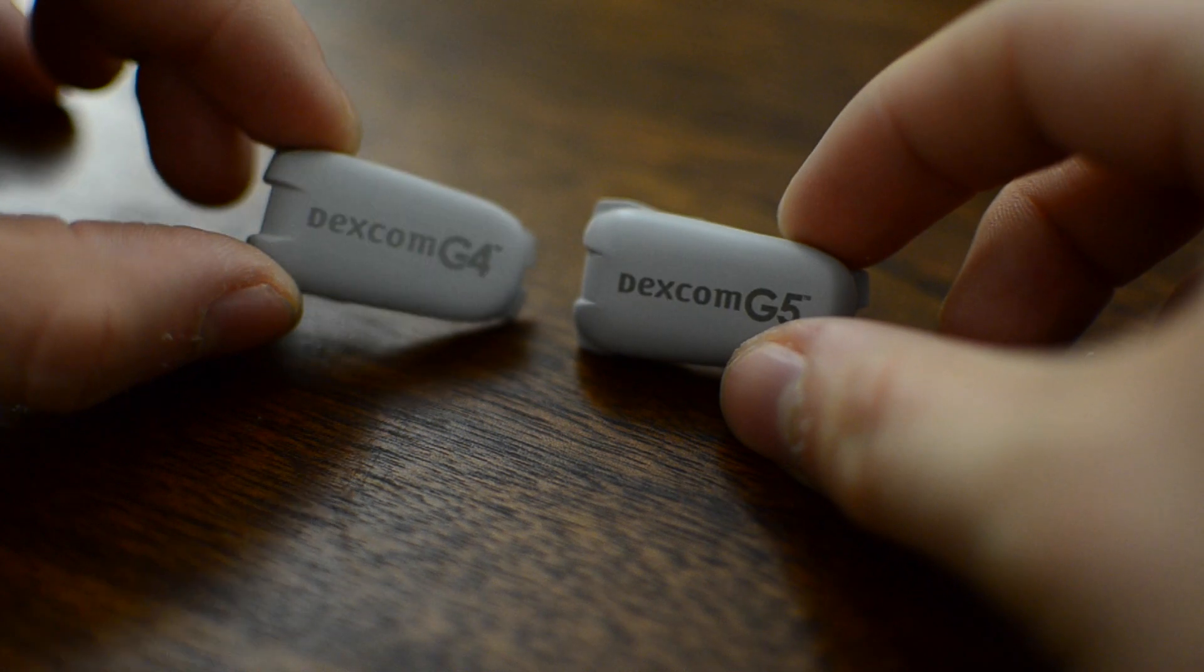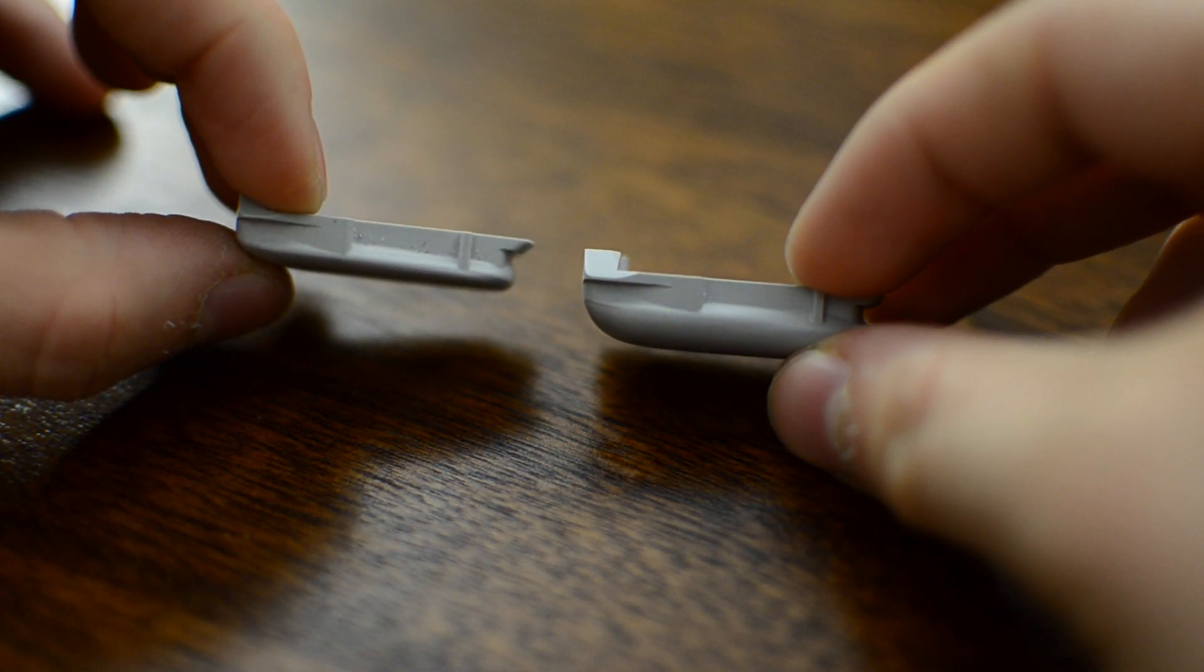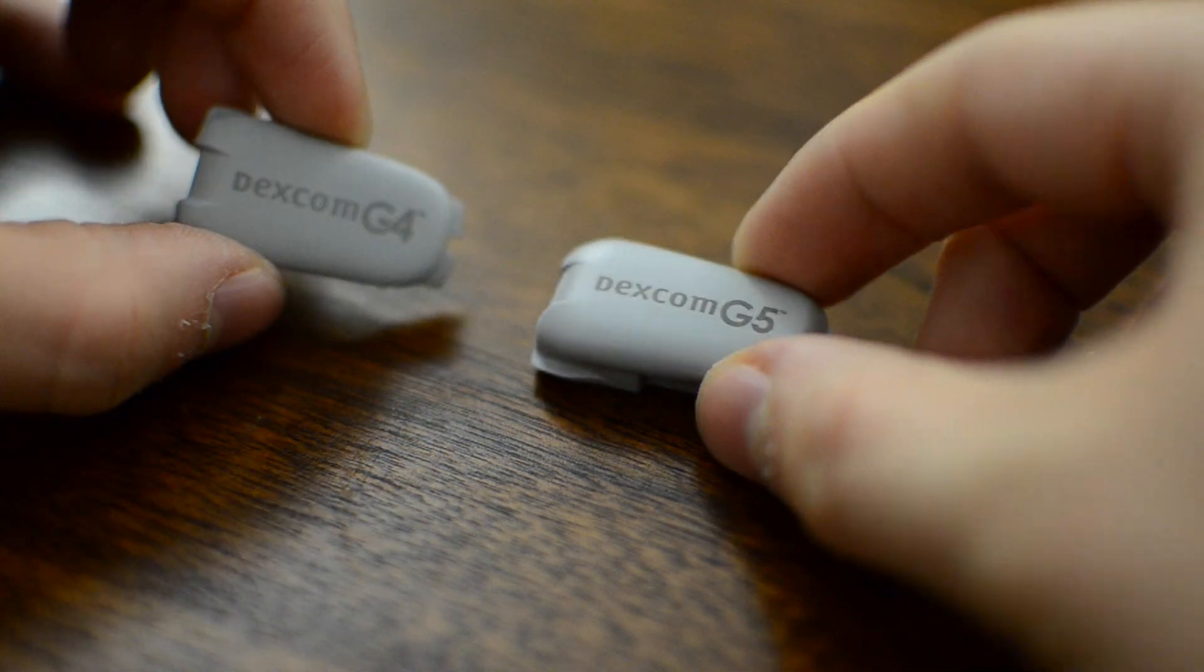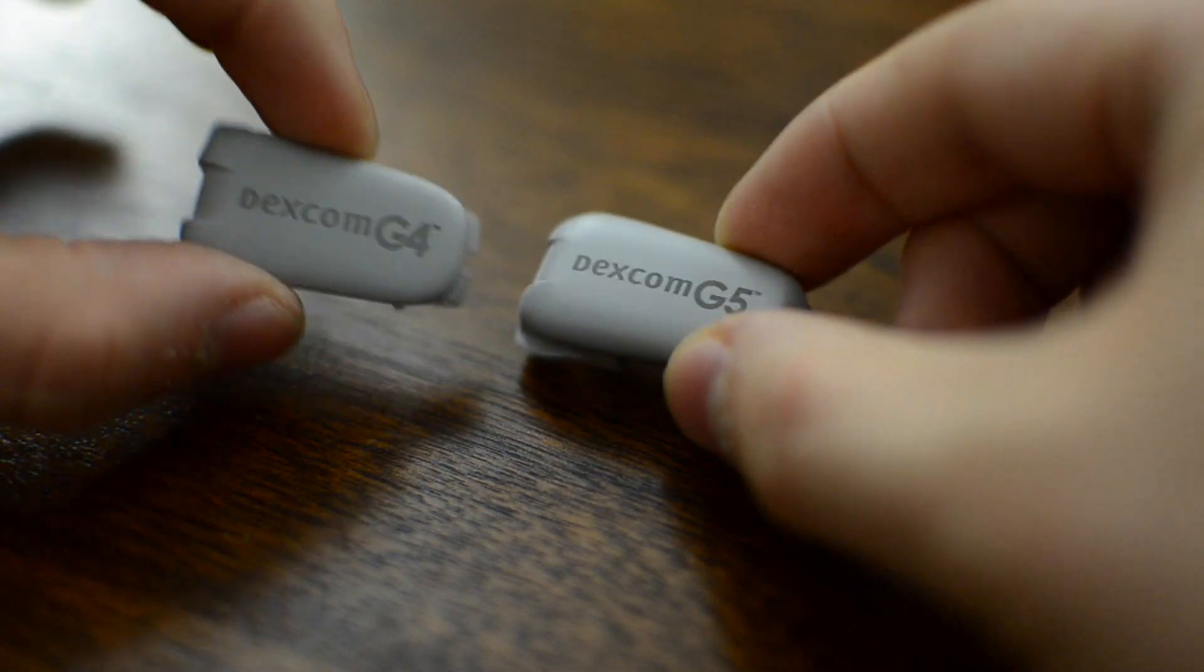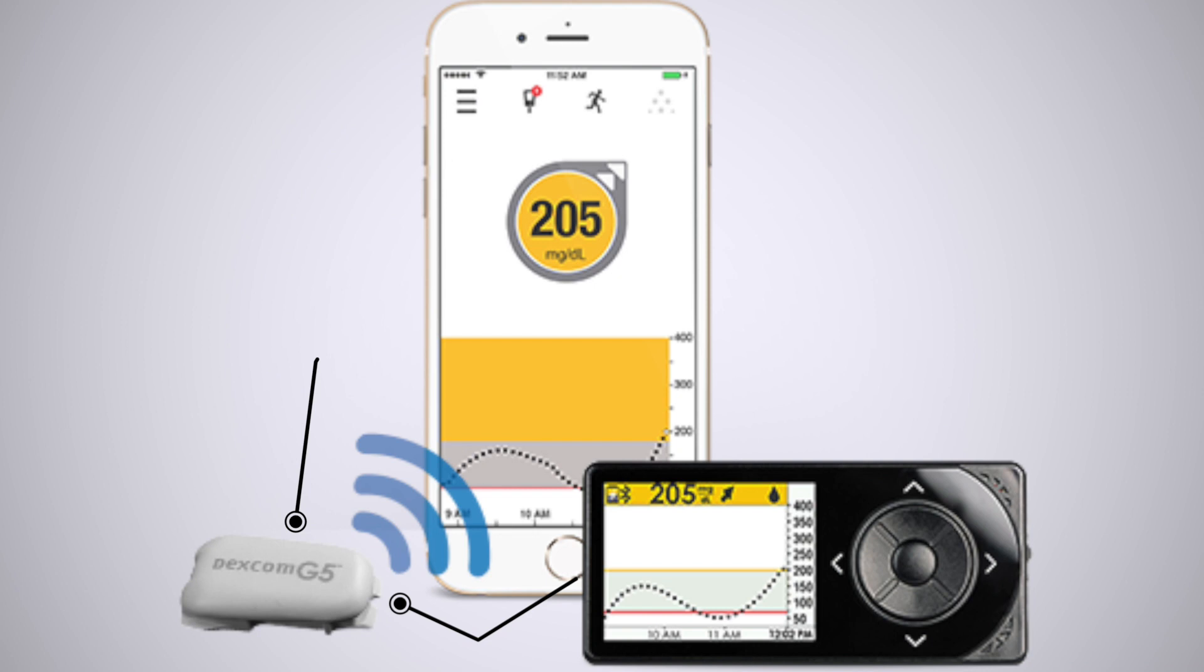And while it does have that space, that does not guarantee a longer life. It's actually only a three-month lifespan for the G5 sensor compared to the G4. So it does have that extra room for more battery in that Bluetooth technology, but that does not mean it lasts longer. If we look at how the G4 works, the transmitter would then send a proprietary RF signal to the receiver. Then that receiver would send a signal over to the phone. Now that phone would be using Bluetooth to connect to the receiver and that would be shared using that follow application for anyone else.